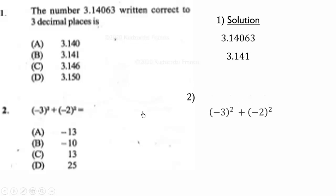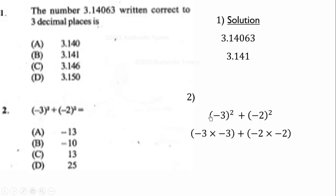The second question: we have negative three squared plus negative two squared. Let us write it as multiplication — negative three times negative three, plus negative two times negative two. Negative three times negative three gives nine, and negative two times negative two gives four. We add to get thirteen. Therefore the correct answer is C.